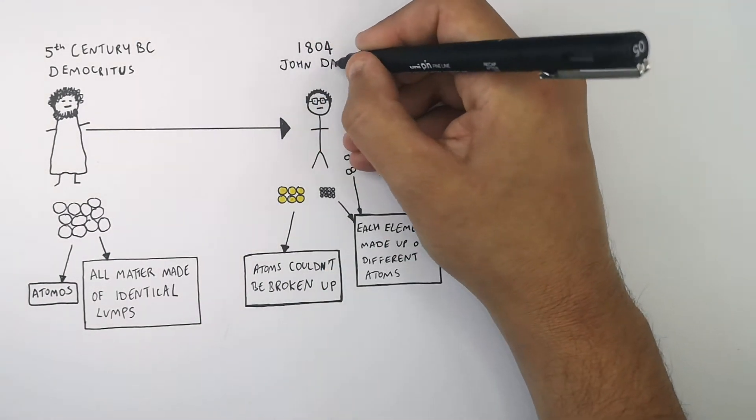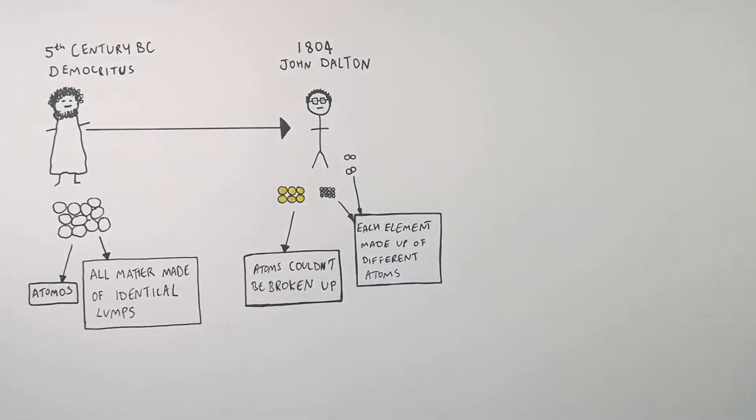So in 1804, John Dalton wrongly stated that atoms couldn't be broken up, but he correctly stated that each element was made of different atoms.